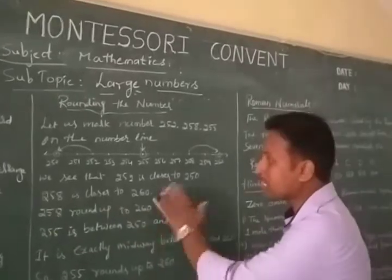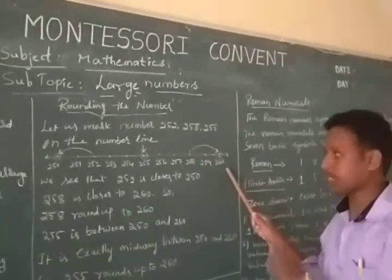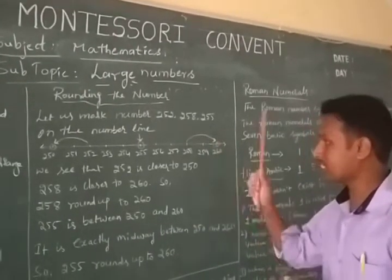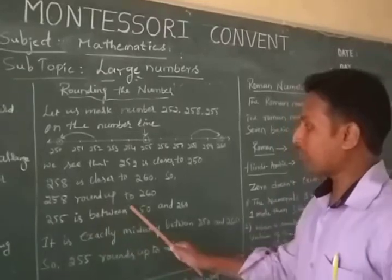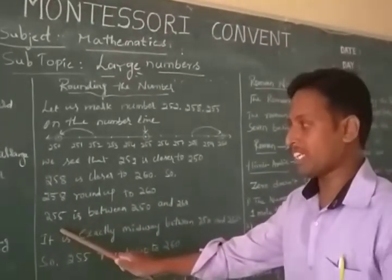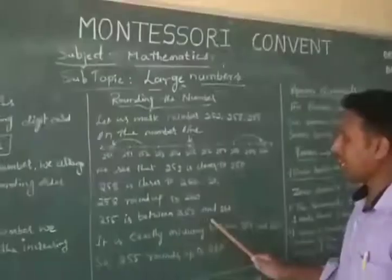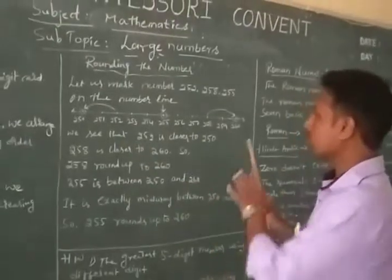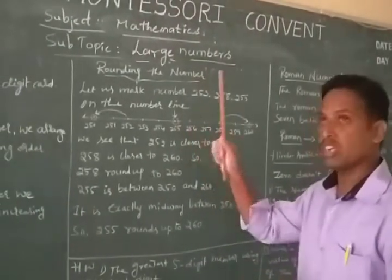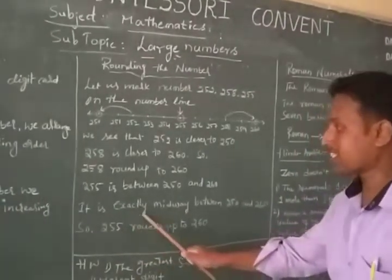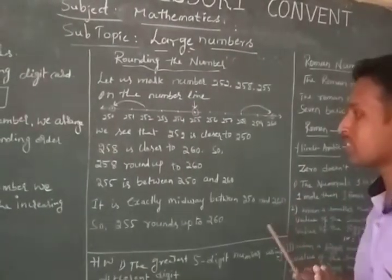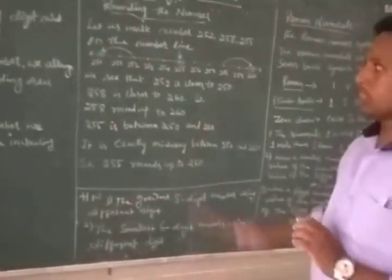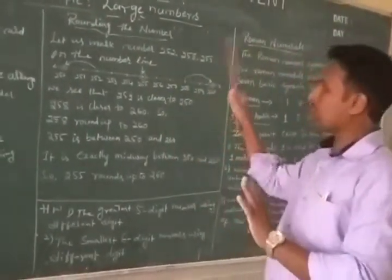258 is closer to 260, because the nearest value is 260. So 258 rounds up to 260. For 255, it is exactly midway between 250 and 260. This is the midway number, so we round up to 260.